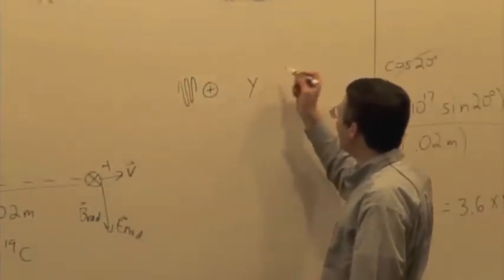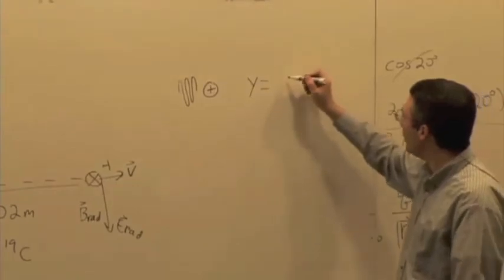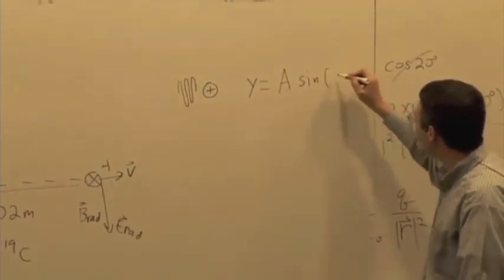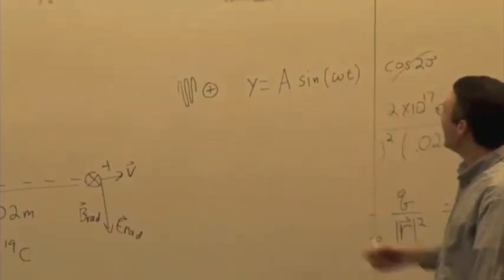Say it's oscillating up and down, so its y position is going to be some amplitude times the sine of some function ωt, right?